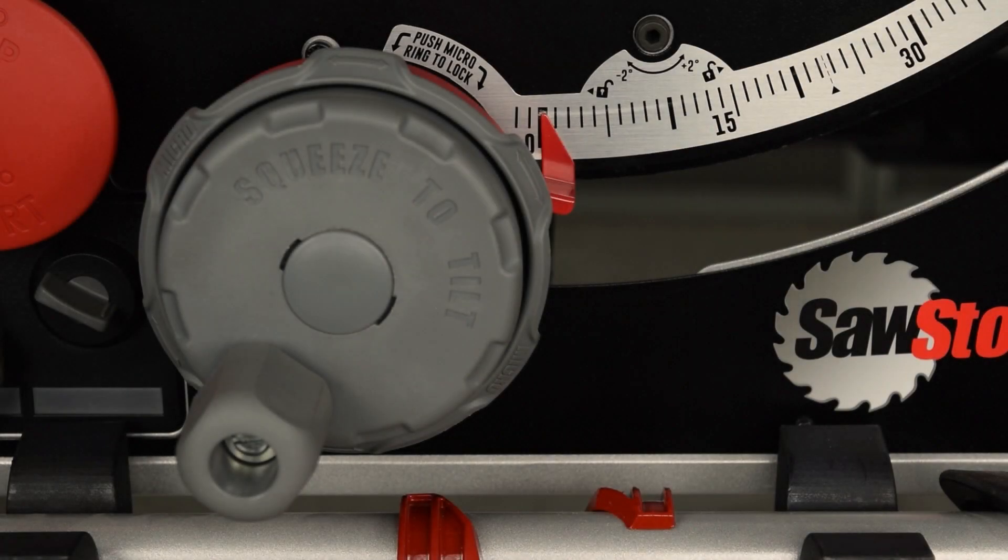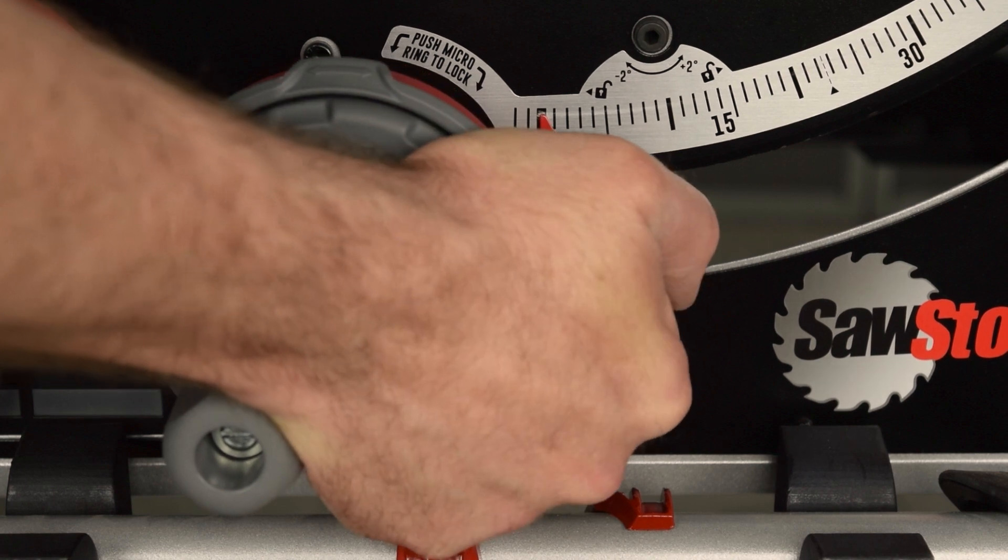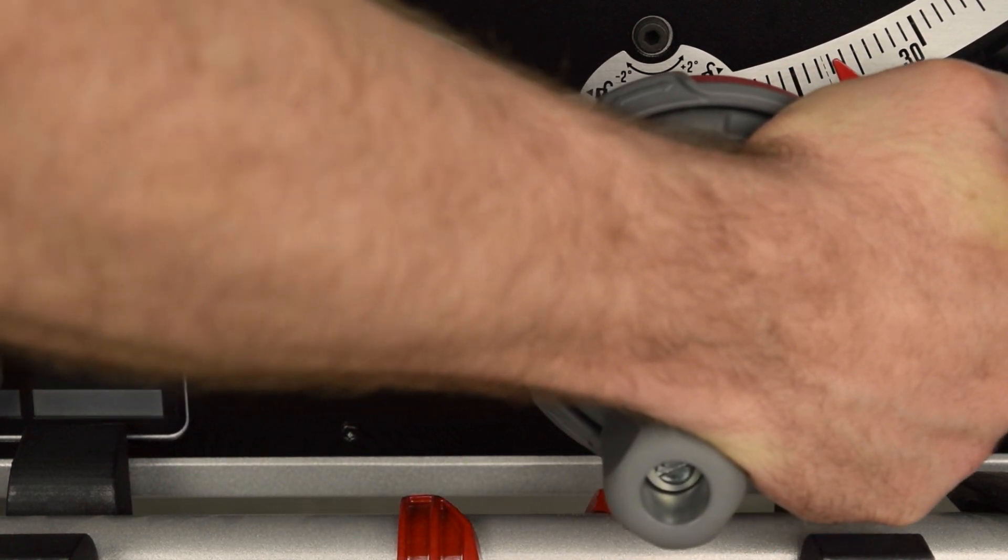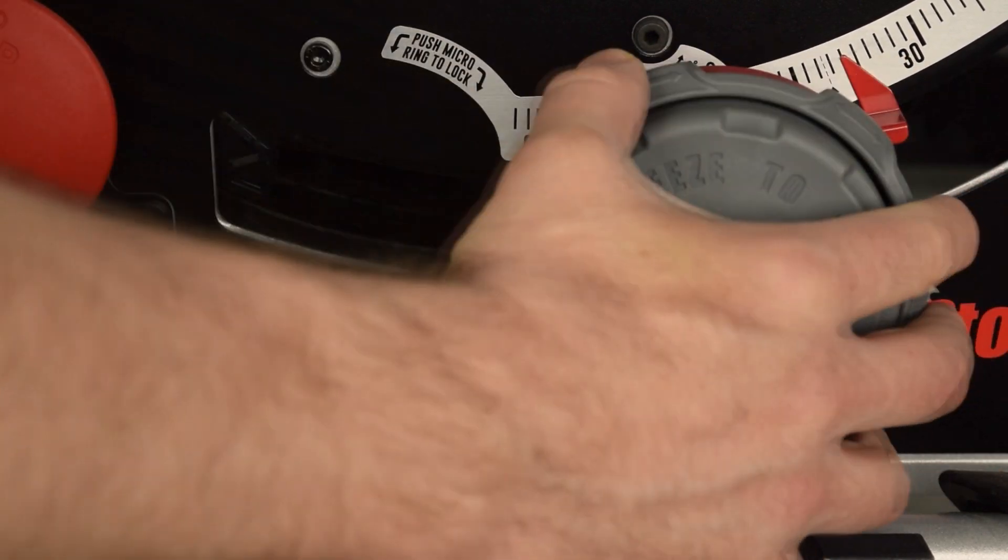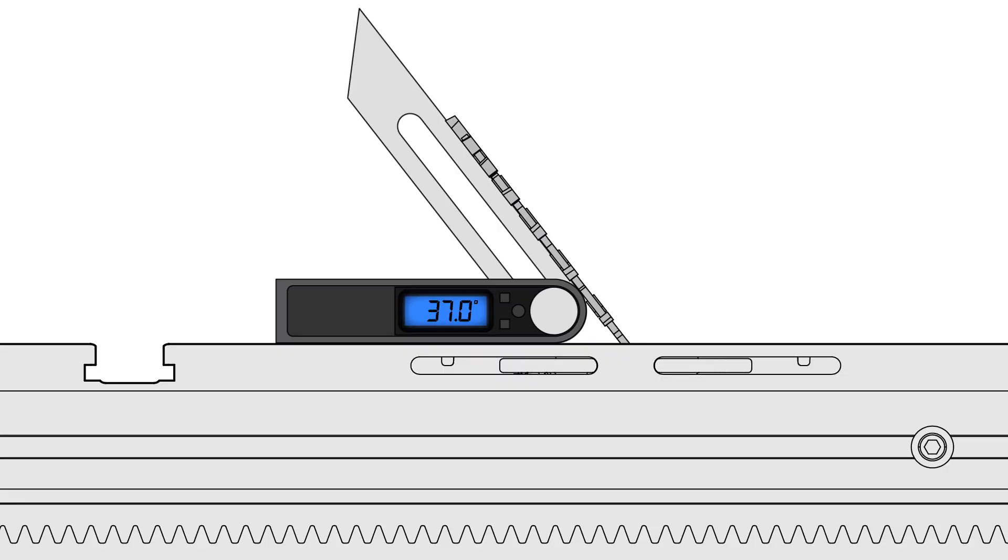This video shows you how to use the bevel control on your SawStop compact table saw. You use the main bevel control to set the bevel to approximate bevel settings. You use the micro bevel to fine tune the angle adjustment.